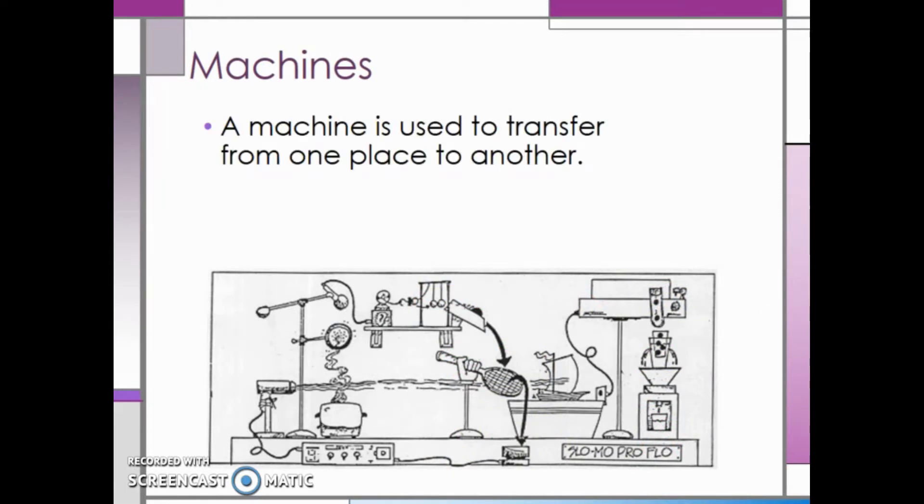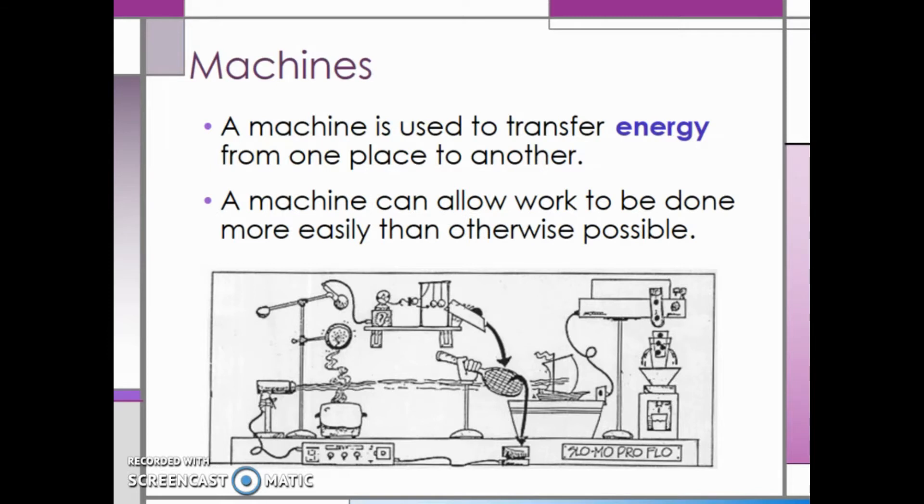A machine is used to transfer energy from one place to another. It can allow work to be done much more easily than otherwise possible. In this picture, we have an example of a Rube Goldberg machine.